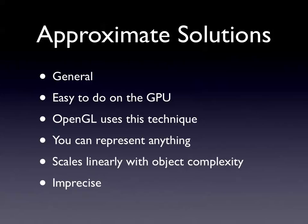Approximate solutions are easy to do on the GPU. Pretty much every single GPU is made to work with triangles or quads - two or three three-point objects. OpenGL uses this technique, so it's quite relevant. You can represent basically anything with triangles - you just need enough of them so you can't tell they're triangles and it looks smooth.